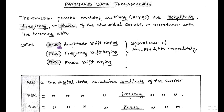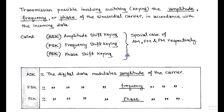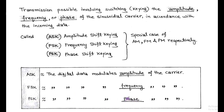ASK, FSK, and PSK are the special cases of AM, FM, and PM respectively. In ASK technique, the digital data modulates the amplitude of the carrier. In FSK, the frequency of the carrier is modulated or switched according to the input digital data. While in PSK technique, the phase of the carrier is switched or keyed according to the digital data.